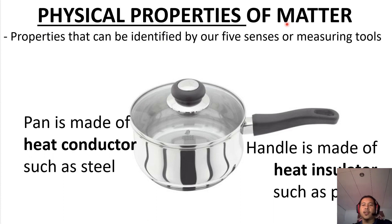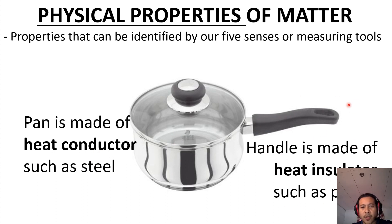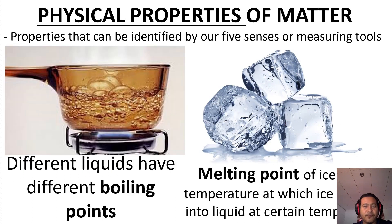Physical properties of matter — properties that can be identified by our five senses or measuring tools, this is what we call physical properties of matter. Ciri-ciri yang boleh kita tentukan dengan menggunakan lima deria ataupun alat pengukur. Contohnya, pan is made of a heat conductor such as steel — ini kita boleh tentukan dengan kita pegang dan panaskan. Dia adalah conductor haba yang baik. Handle pula adalah heat insulator — dia adalah jirim juga tapi tak dapat mengalirkan haba. Bila kamu panaskan ke kawasan ni dan pegang dekat handle, dia tak panas.